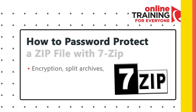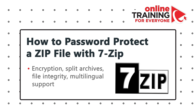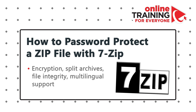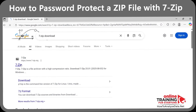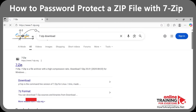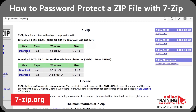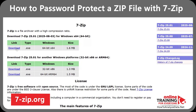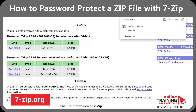The easiest way to do it in Windows is with a free tool called 7-Zip. 7-Zip is a free, lightweight program you can download at 7-zip.org. Select the version for your operating system — I'm going to select the default Windows 64-bit download.